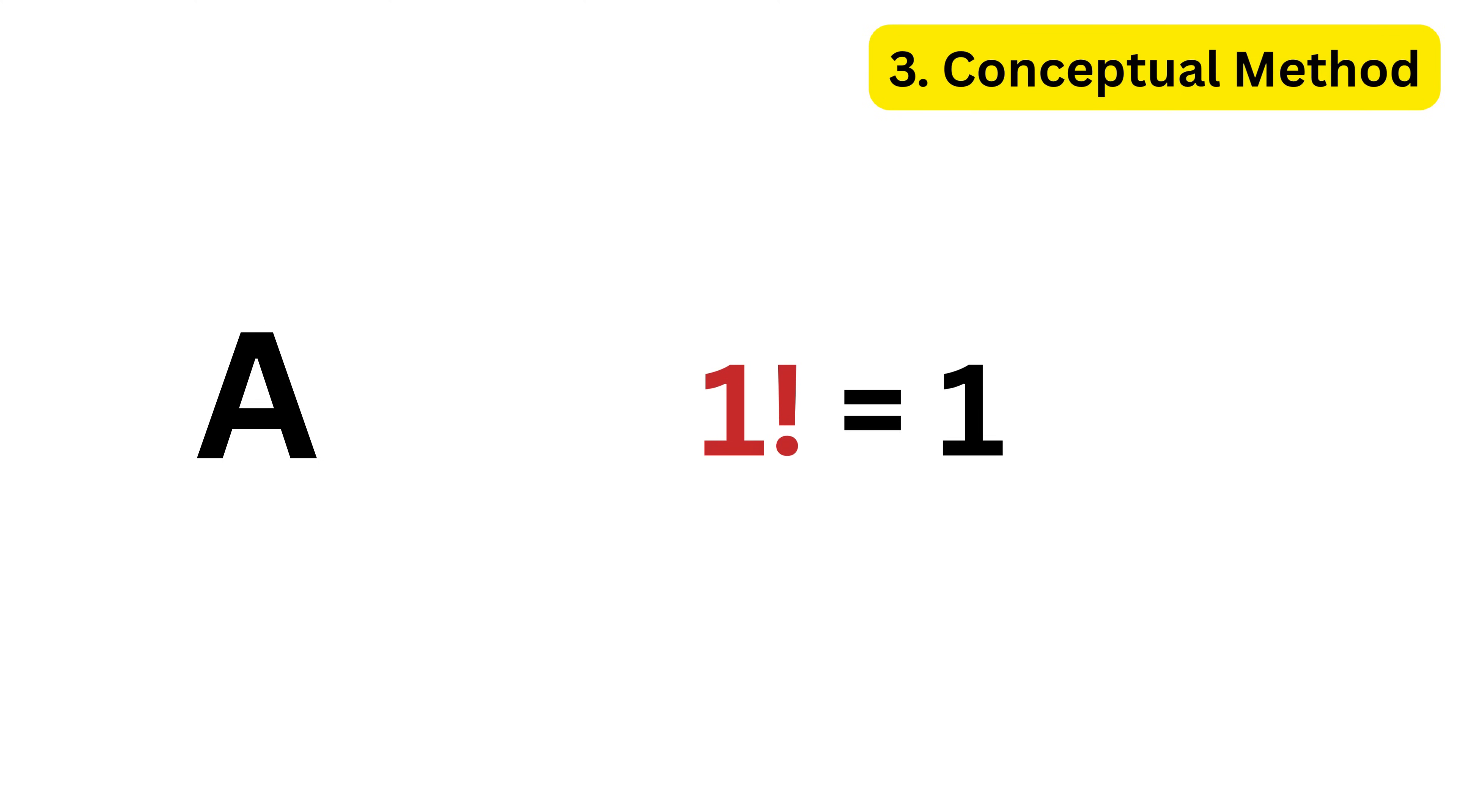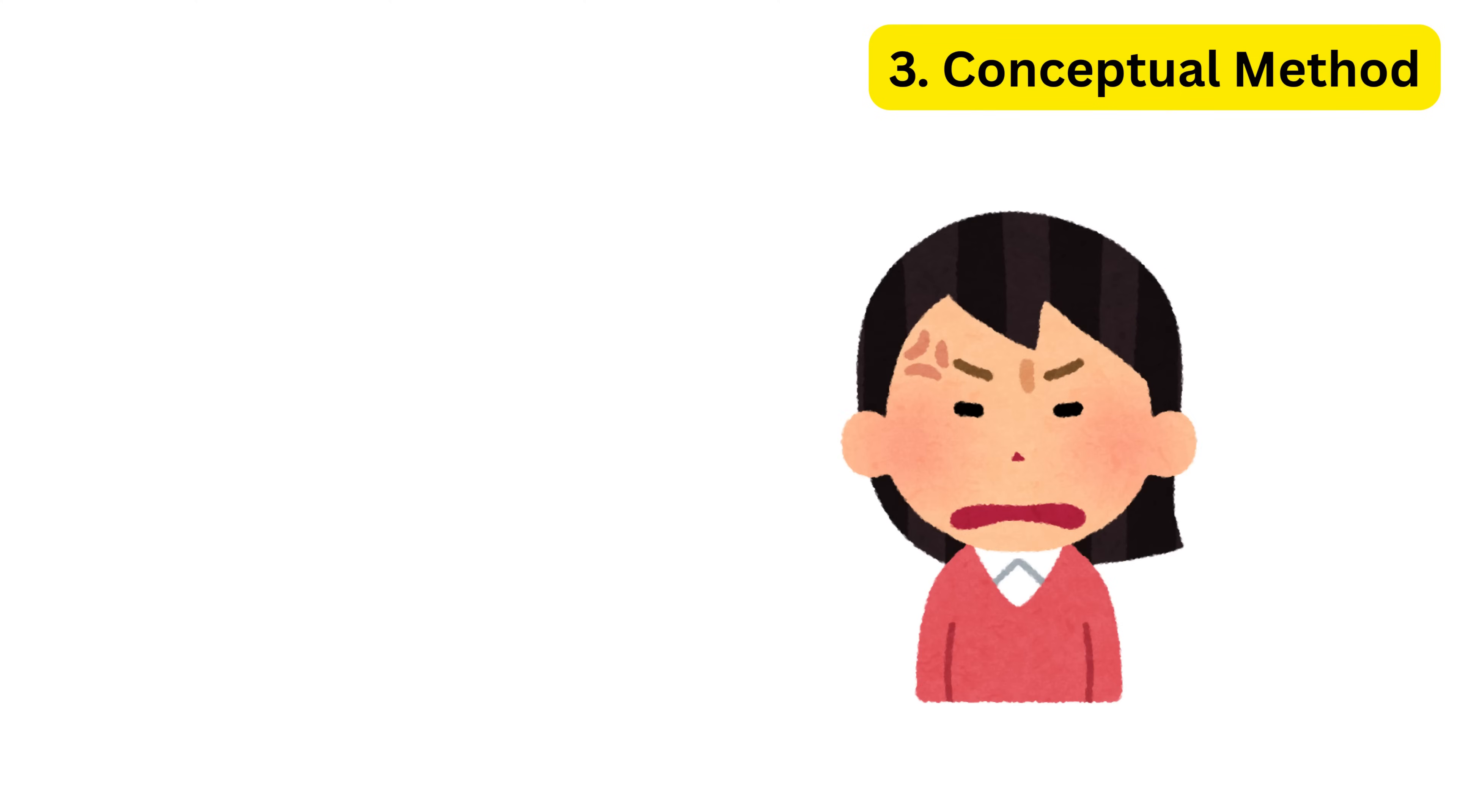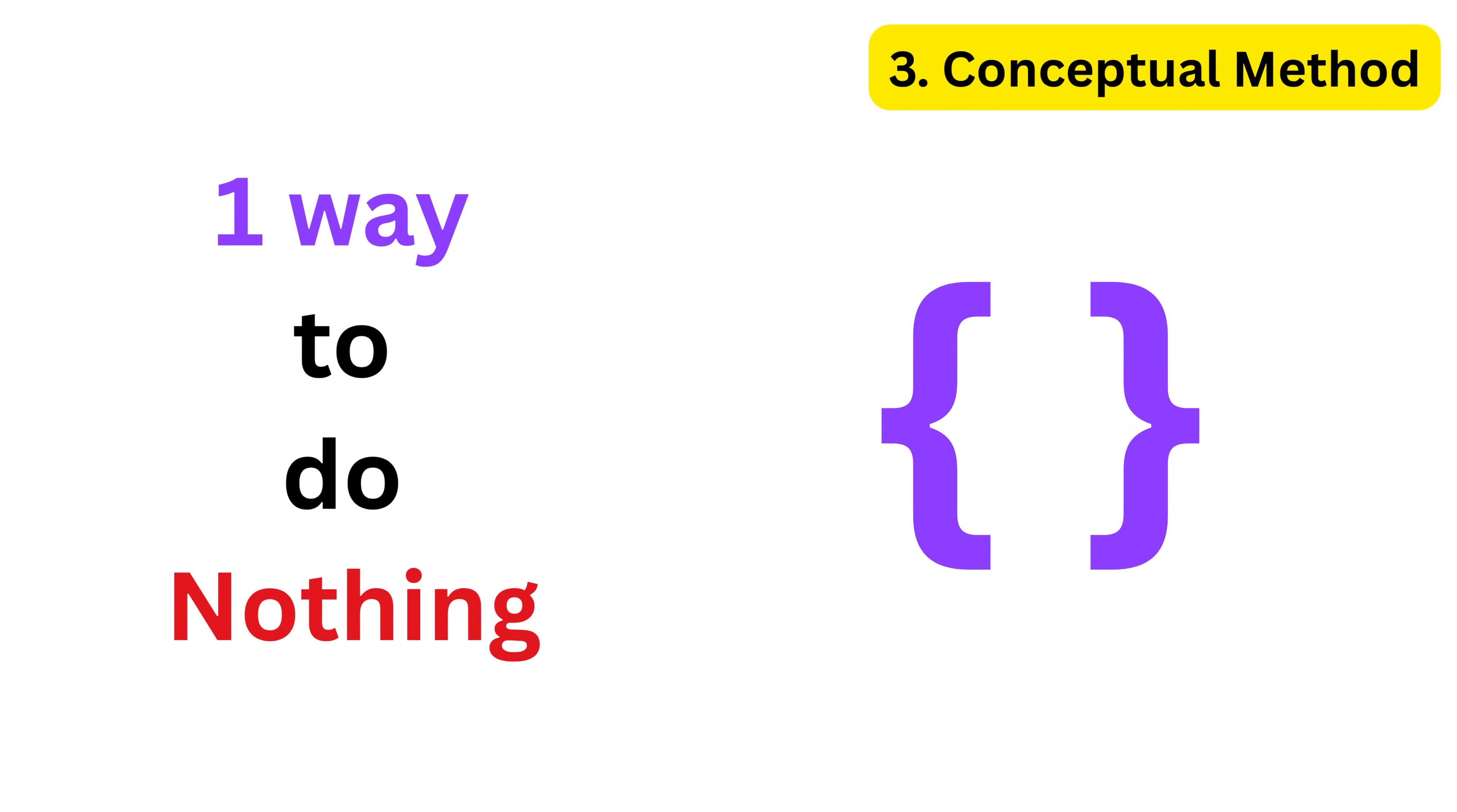Now think about this. How many ways can we arrange zero objects? That sounds strange, right? But there is still exactly one way to do nothing. That one way is the empty arrangement. So by this definition, zero factorial must be one.